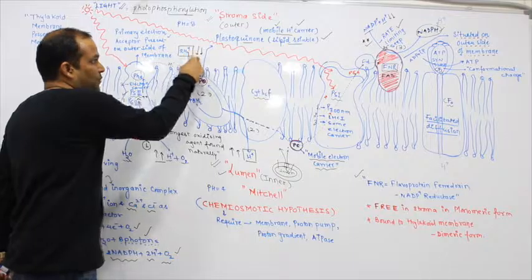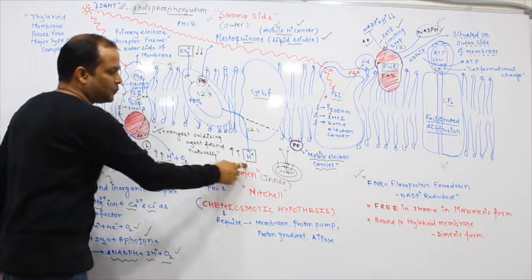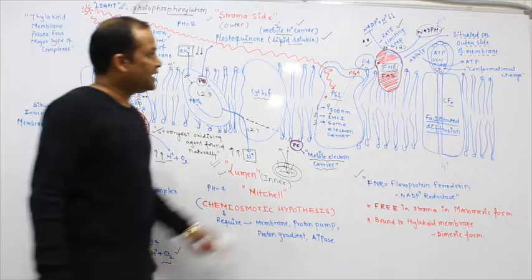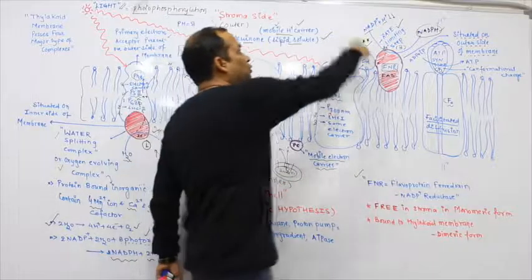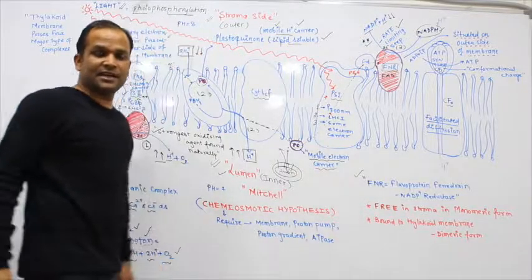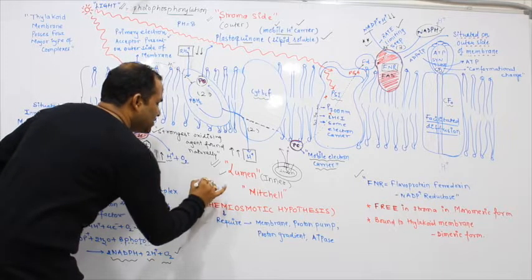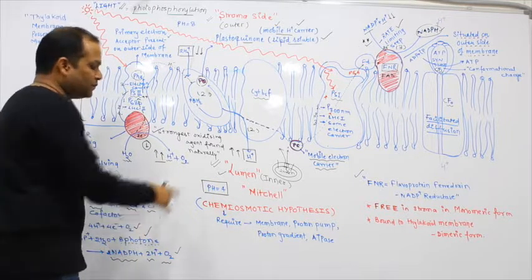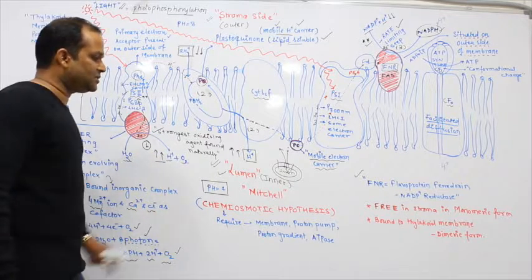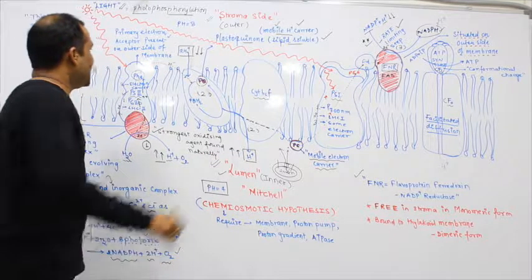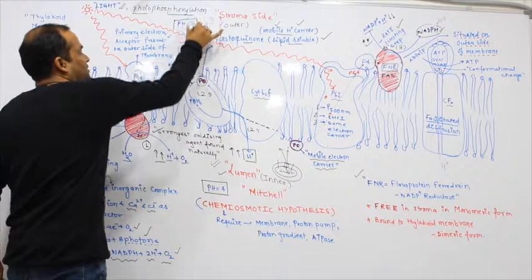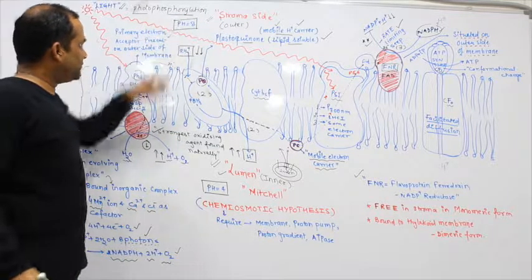In the second reaction, proton on stroma side decreases and proton on lumen side increases. In the third reaction, proton on stroma side decreases. Because of these three reactions, the pH inside the lumen becomes 4 and pH outside becomes 8.